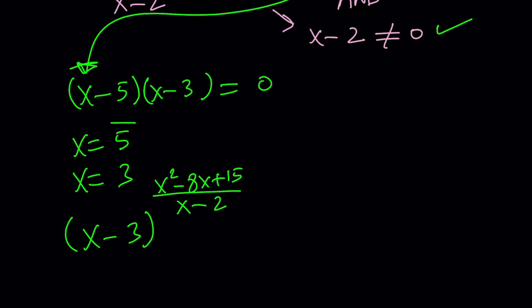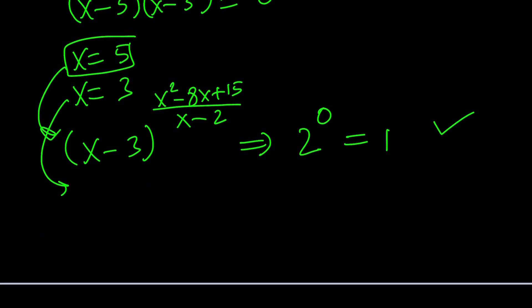So if x is 5, we're good because the exponent will be 0. So we're going to get something like 2 to the power 0, which is 1. That's good. But if x is equal to 3, then you get 0 to the power of 0. Is that equal to 1? I think it is.